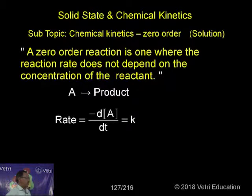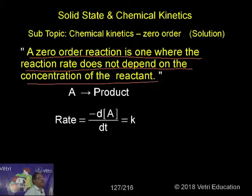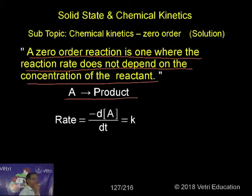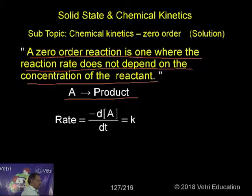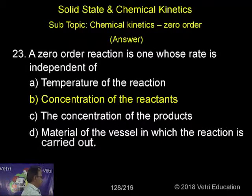Let me explain what zero order is. A zero order reaction is one where the reaction rate does not depend on the concentration of the reactant. Suppose A is the reactant giving the product. According to the law of mass action, the rate is equal to minus dA by dt, which equals k — a constant. There are no concentration terms involved in this equation. So the answer is B.